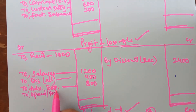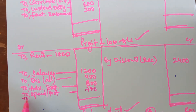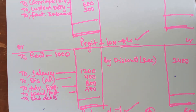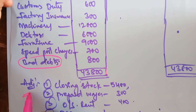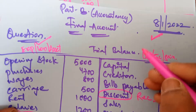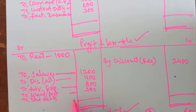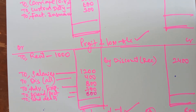Speed post charges is indirect expenditure — postal expenditure which you incur while communicating with outsiders from the office. Therefore it is indirect expenditure. No adjustment — take the amount to the outer column. Lastly, bad debts: sometimes it will be given inside the trial balance, sometimes in the adjustment. If given in adjustment, you take it twice; if given in the trial balance, you take it only once. Bad debts given inside the trial balance — take it only once as a loss. This loss is not connected with goods, so it is an indirect loss taken in profit and loss account.